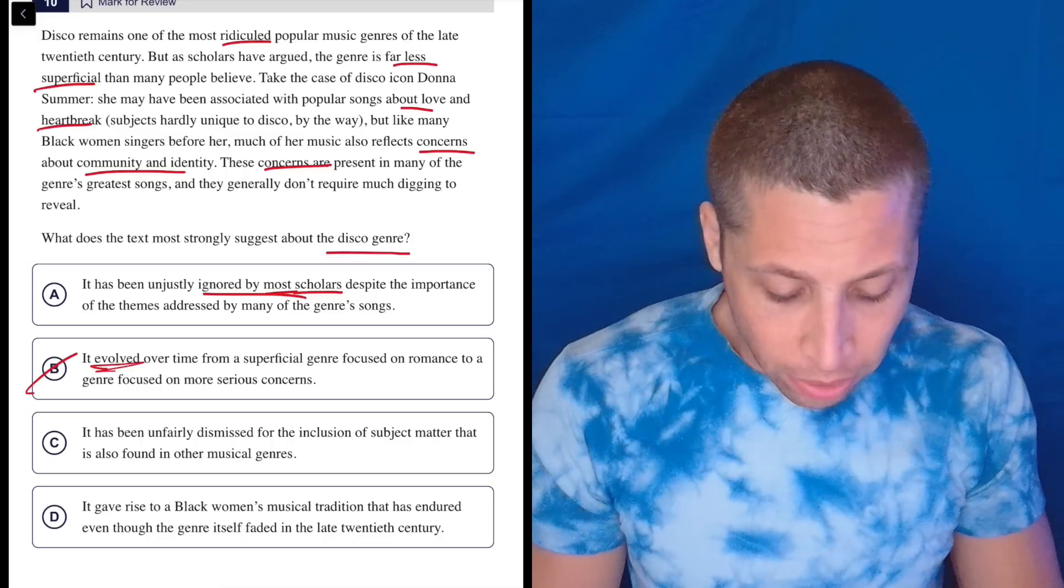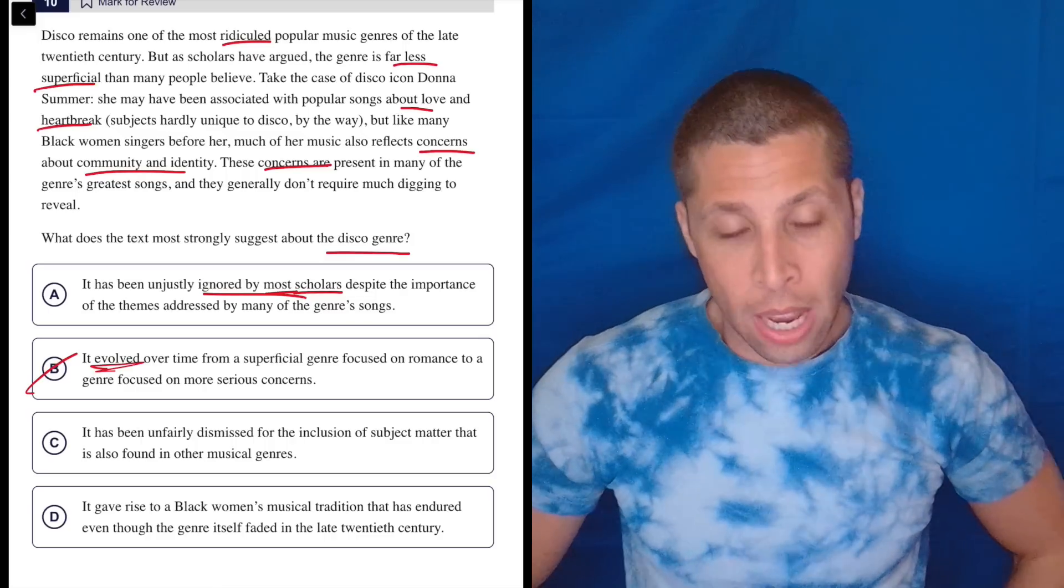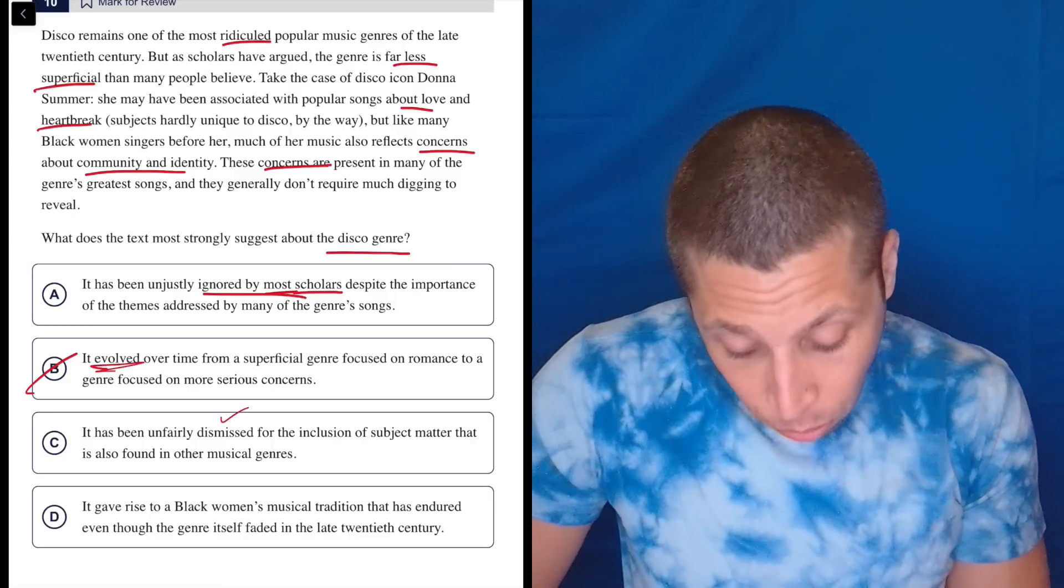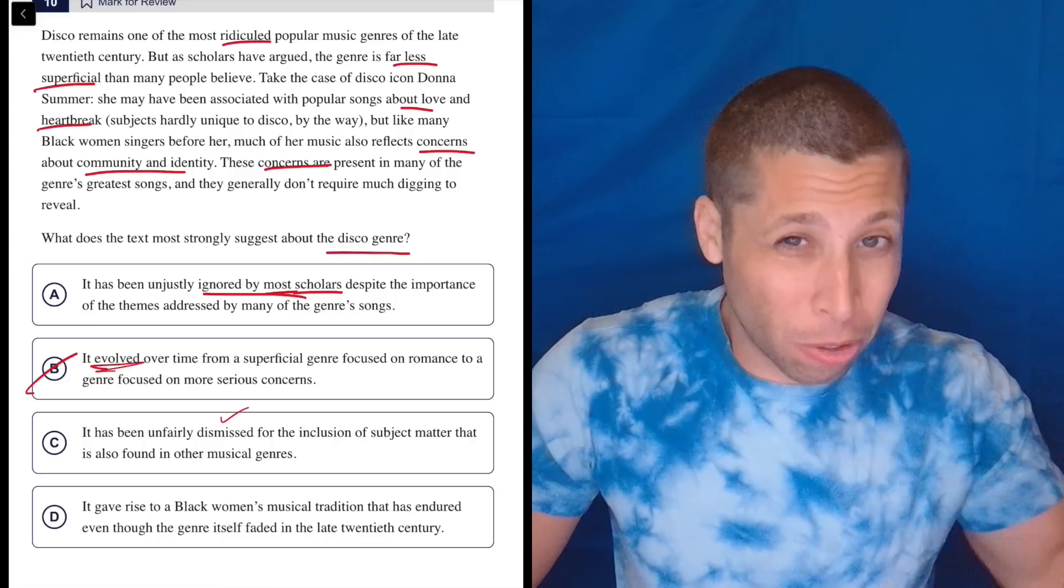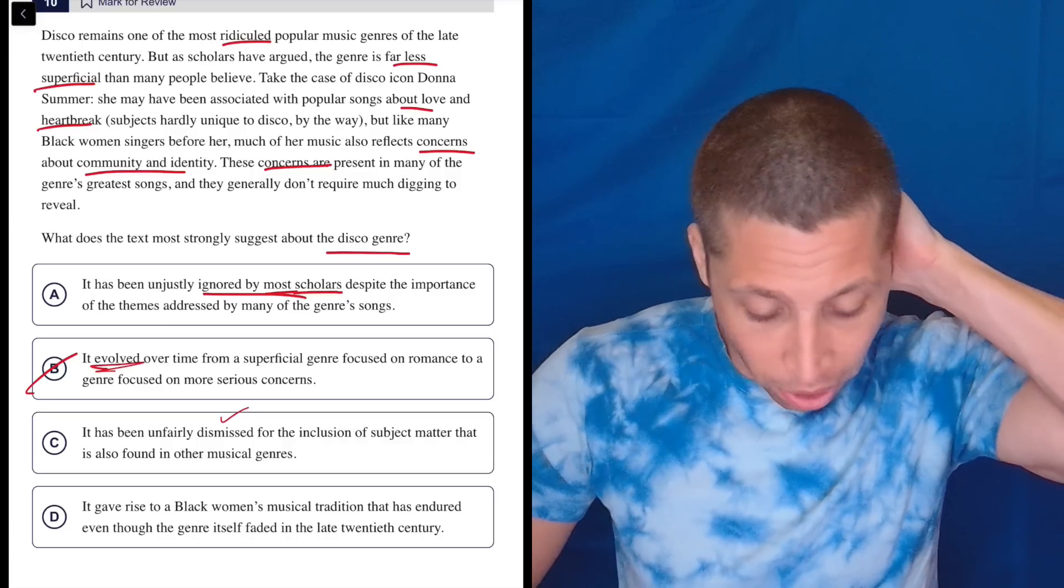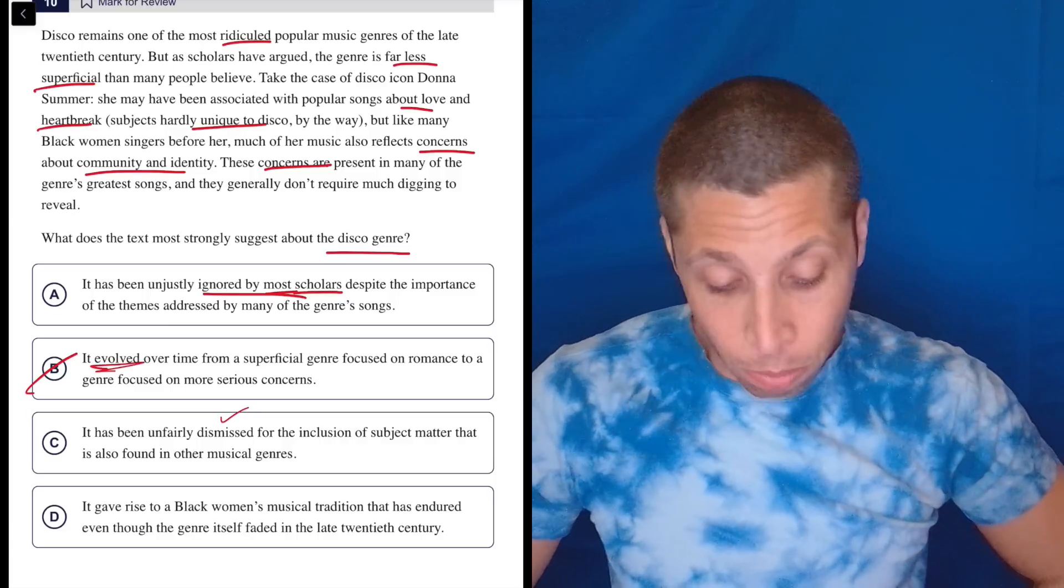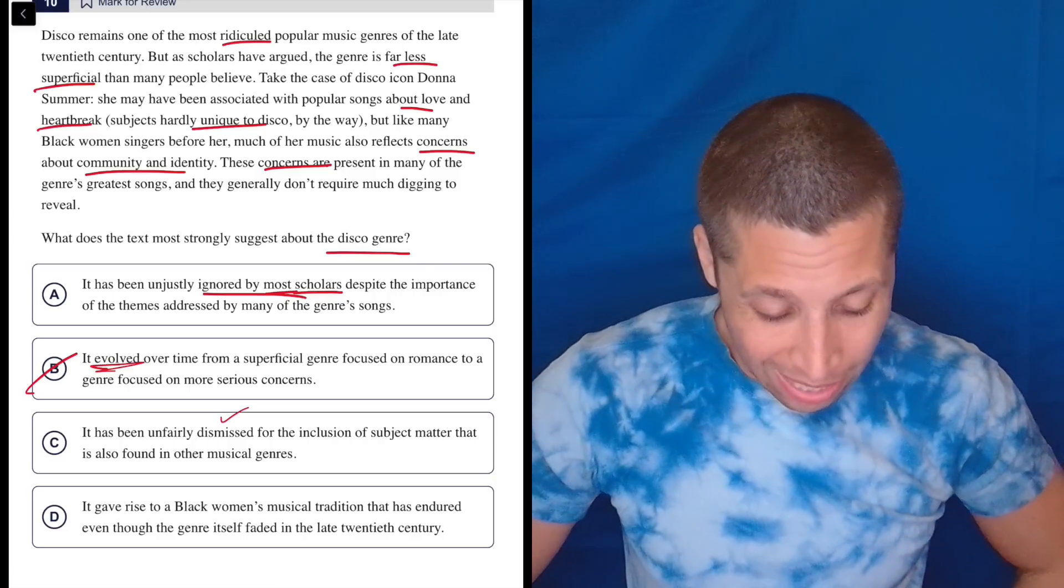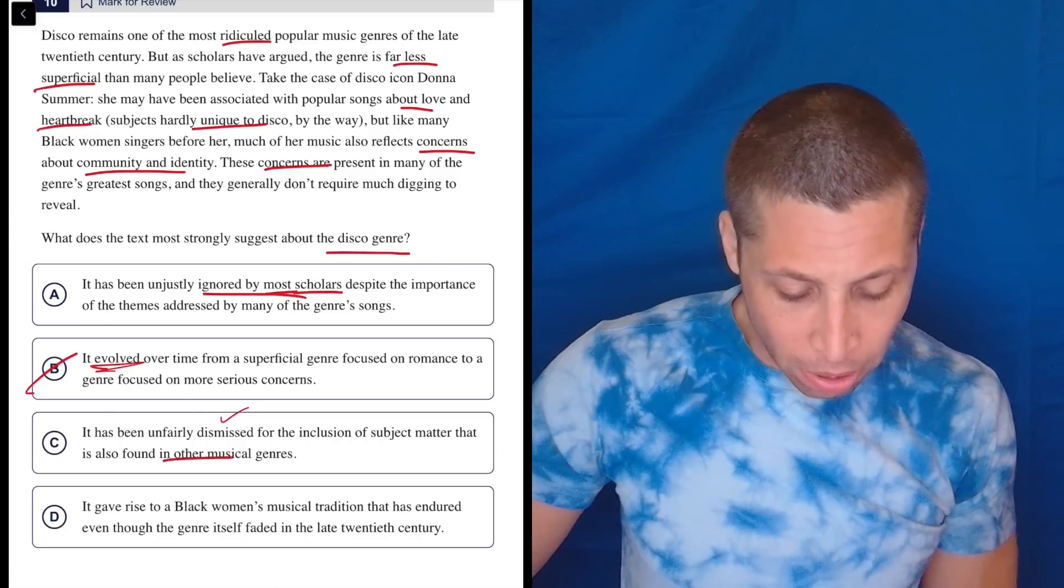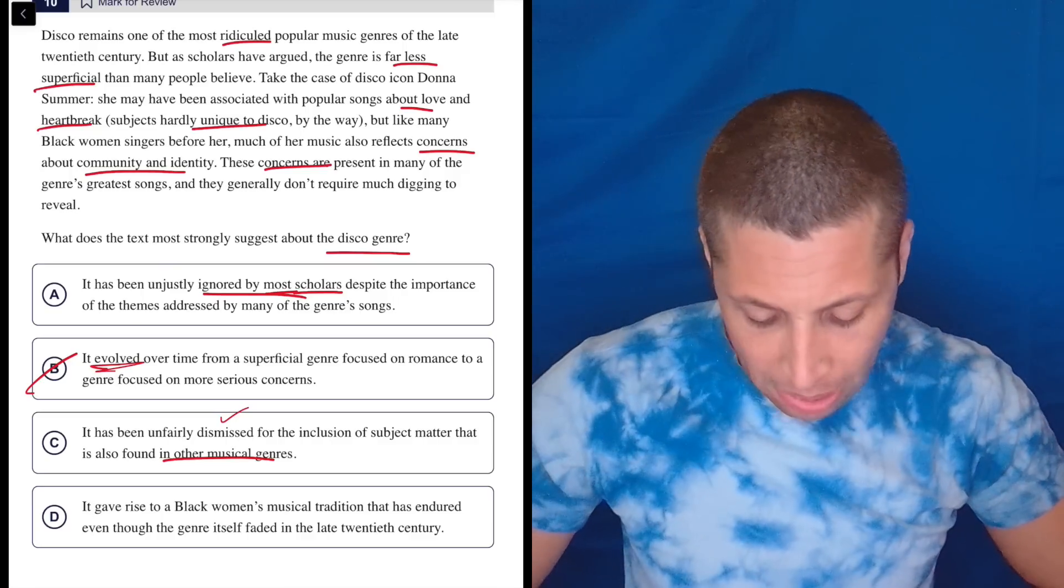C. It has been unfairly dismissed for the inclusion of subject matter that is also found in other musical genres. Unfairly dismissed seems right. Ridiculed, you're kind of making fun of something, you're dismissing it, you're saying it's superficial. Inclusion of subject matter that is also found in other music genres. Yeah, it does say that things are hardly unique to disco, meaning it's in other things. I don't love that it's about other musical genres. It doesn't feel like that's the main issue, but I don't know. Let's keep it.